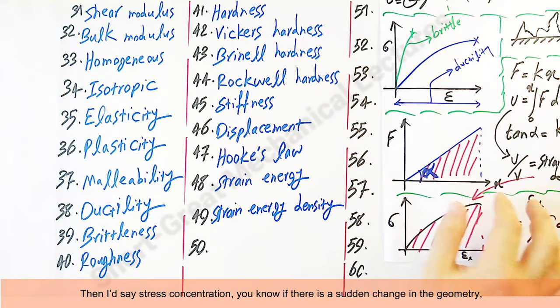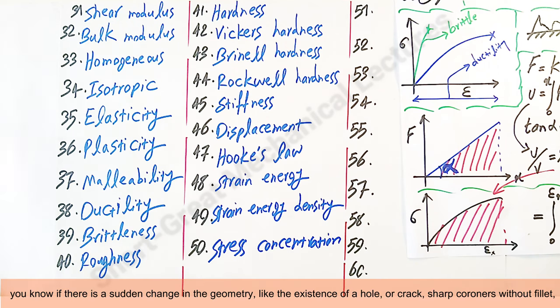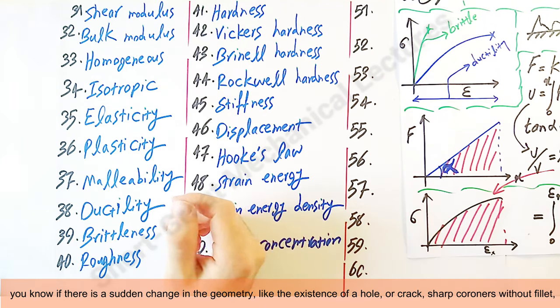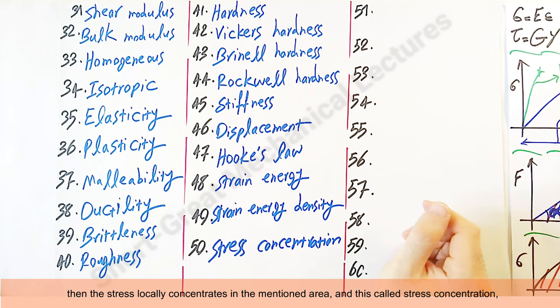Then I'd say stress concentration. You know, if there is a sudden change in the geometry, like the existence of a hole or crack, sharp corners without fillet, then the stress locally concentrates in the mentioned area, and this is called stress concentration.